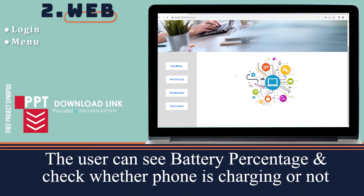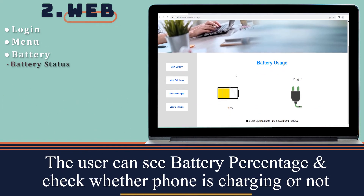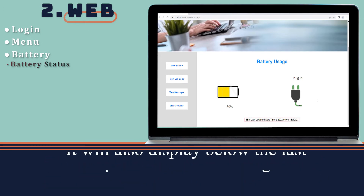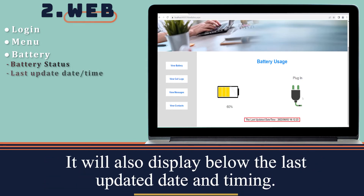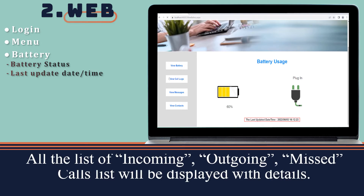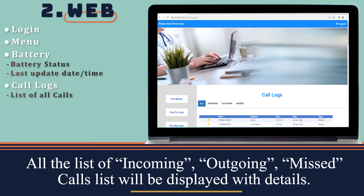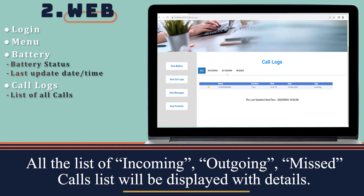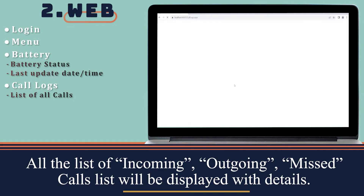The user can see the battery percentage and check whether the phone is charging or not, along with the last updated date and time. All lists of incoming, outgoing, and missed calls will be displayed with details.